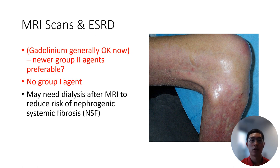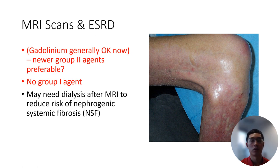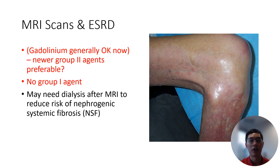For MRI scans, there is still a debate as to whether or not dialysis patients can get gadolinium agents. There is a definite correlation between the older group one gadolinium agents and nephrogenic systemic fibrosis or NSF. So we do not recommend the use of group one agents among late-stage CKD or dialysis patients. The newer group two agents have not been shown to cause NSF among dialysis patients, though studies are limited for now. Please feel free to reach out to us if an MRI with contrast is necessary for your patient, and we can help you and the patient understand the risks and benefits of proceeding. It may be helpful to dialyze these patients afterwards to reduce the concentration of gadolinium over time and prevent known deposition of gadolinium in the body.